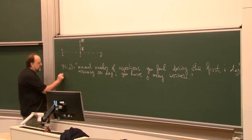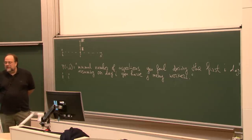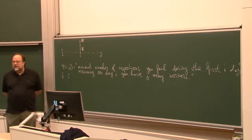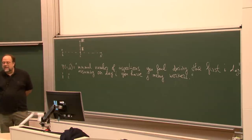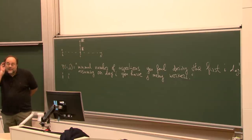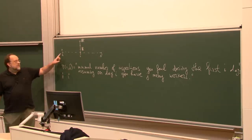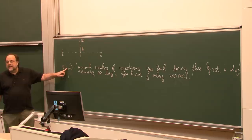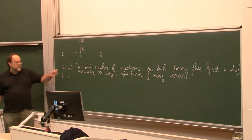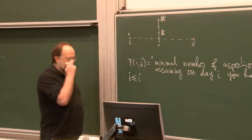Notice: i is the index of the day and j is the number of illegal workers. What is the relationship between j and i given our assumptions? Every day you can hire, keep the number of workers the same, or fire a worker. If you start with zero after i many days, how many workers can you have at most? Only i many workers. So we know that j ≤ i.